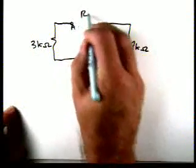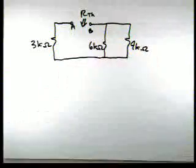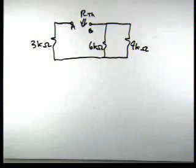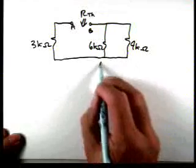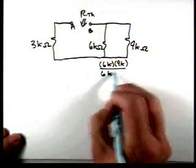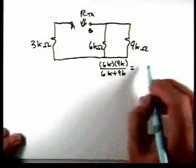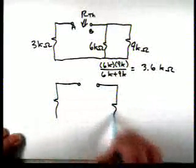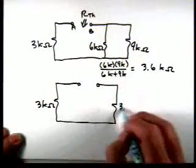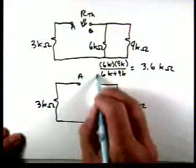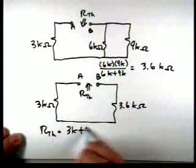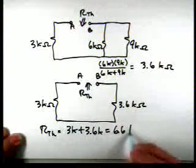Once we redraw the circuit, the 6-kilohm and the 9-kilohm are in parallel. Combining those two in parallel: 6k times 9k over 6k plus 9k gives 3.6 kilohms. Then our Thevenin resistance is 3k plus 3.6k, or 6.6 kilohms.